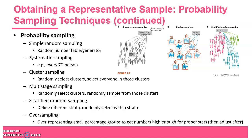Probability sampling is what you want to do to obtain a more representative sample. Using a random number table or random number generator on a computer, you can select a given number of individuals from your population randomly — that's simple random sampling. Systematic sampling is a slightly different method where you sample every seventh person, for example — pick some interval and then sample every nth person.